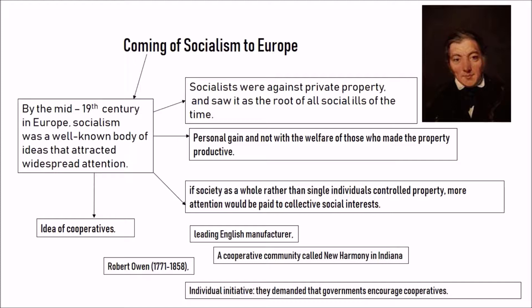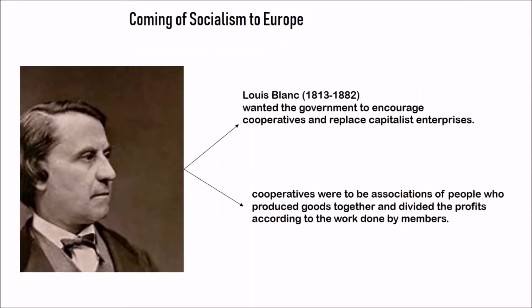Louis Blanc (1813–1882) was another key figure in spreading socialism in Europe. He wanted governments to encourage cooperatives and replace capitalist enterprises. He believed the working class should collectively produce goods and the profits shared among those who worked — not owned by individual capitalists.